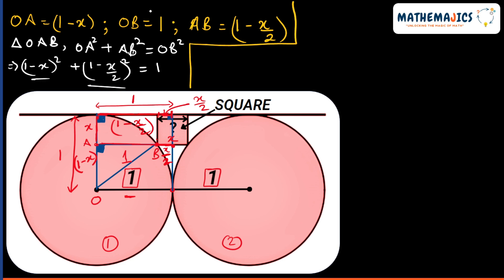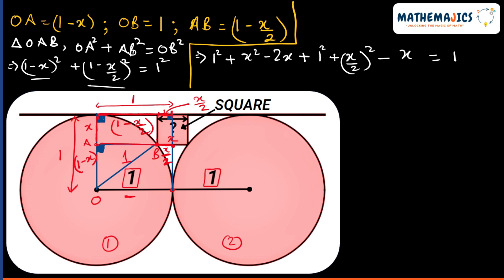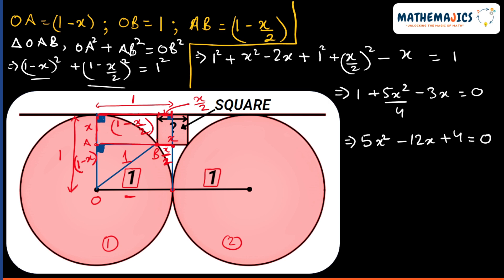Let's expand these brackets using algebraic identities. The first bracket gives us 1 + x² − 2x, and expanding the second bracket gives 1 + x²/4 − x. Simplifying, we get 1 + 5x²/4 − 3x = 0, which further simplifies to 5x² − 12x + 4 = 0.